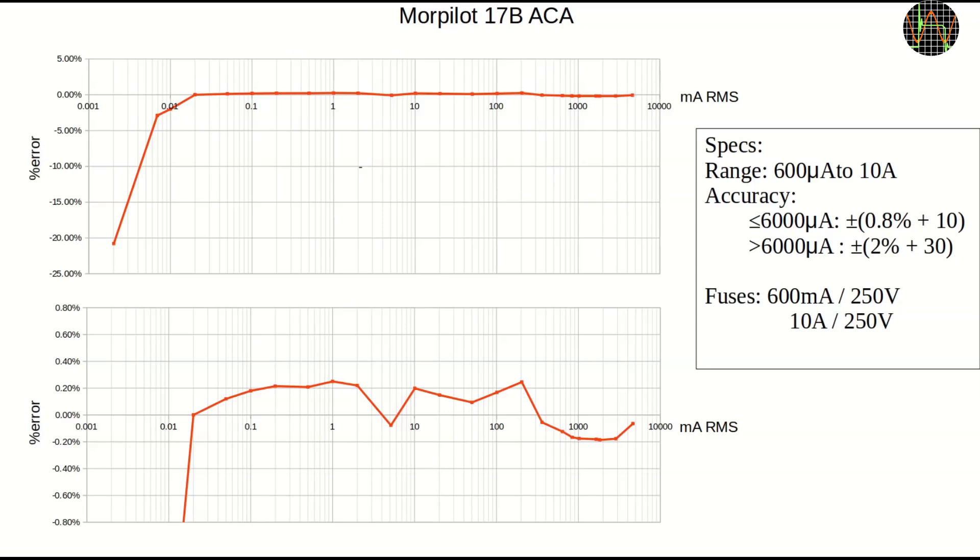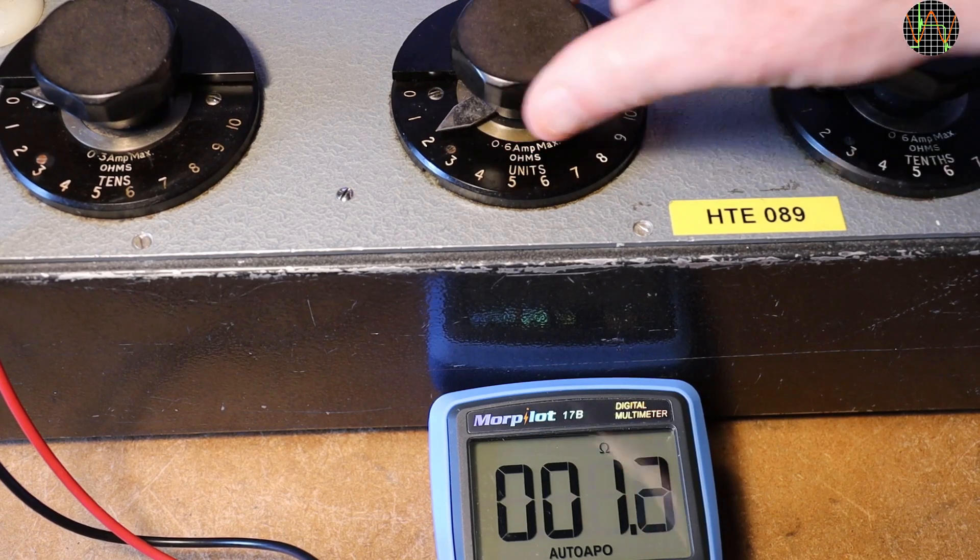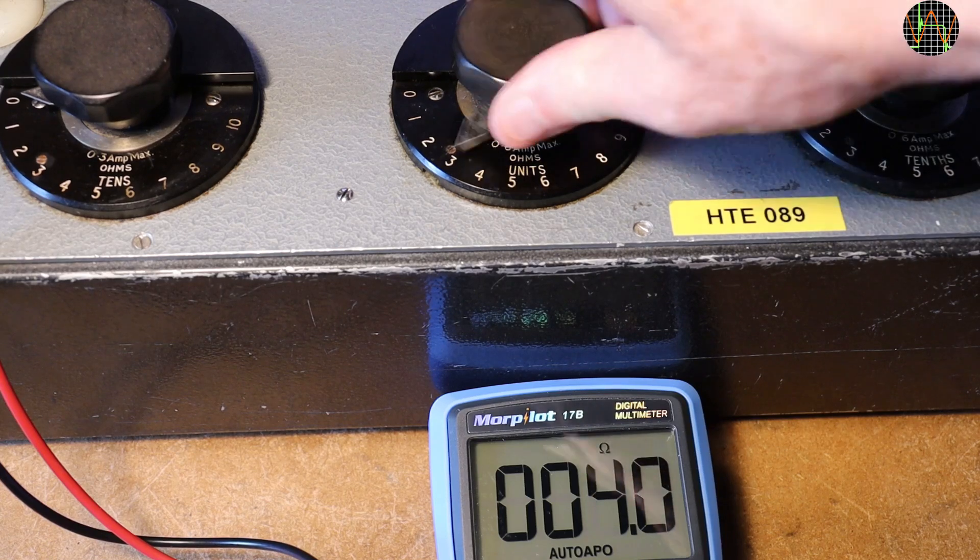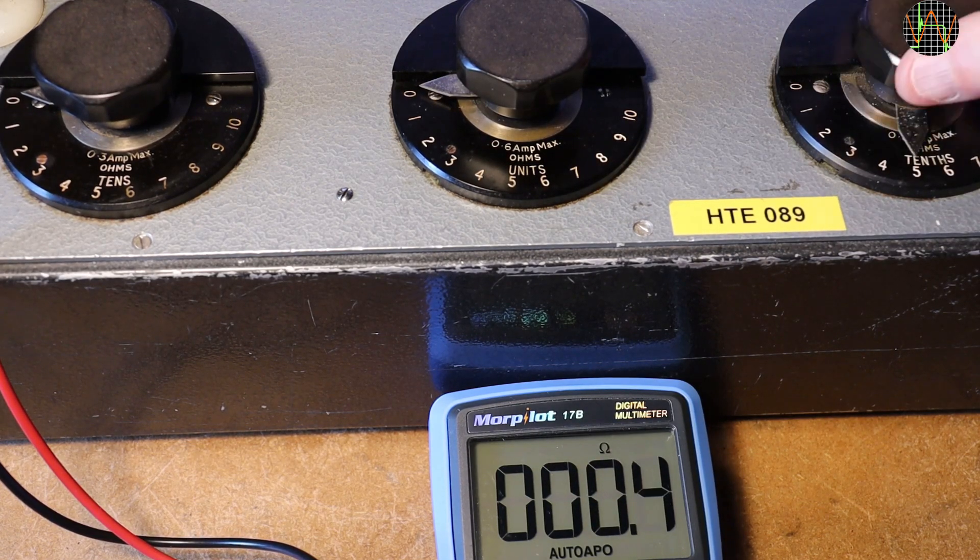For resistance, accuracy is good and in stark contrast to the Grenova. The Morpilot has no problems with low resistances. In fact, it excels at that range. Here is an example how well the Morpilot handles single digit ohms and even 0.1 ohm values. It is pretty astonishing.